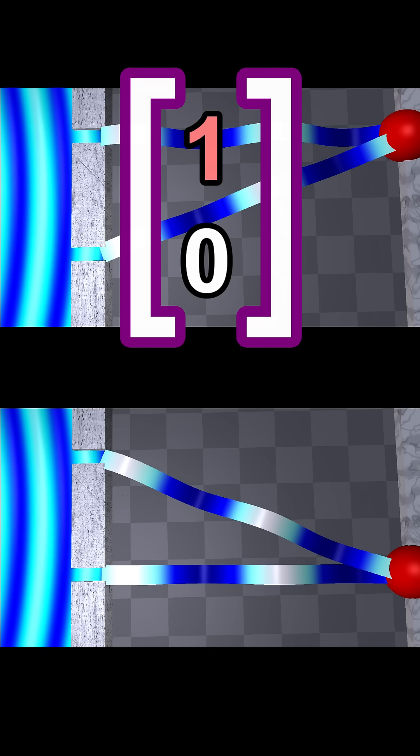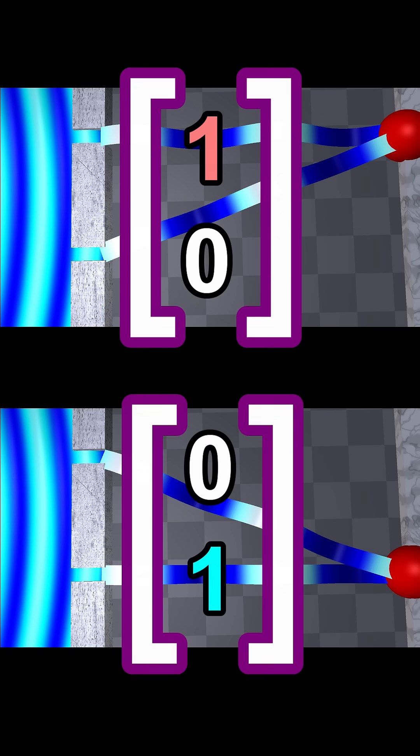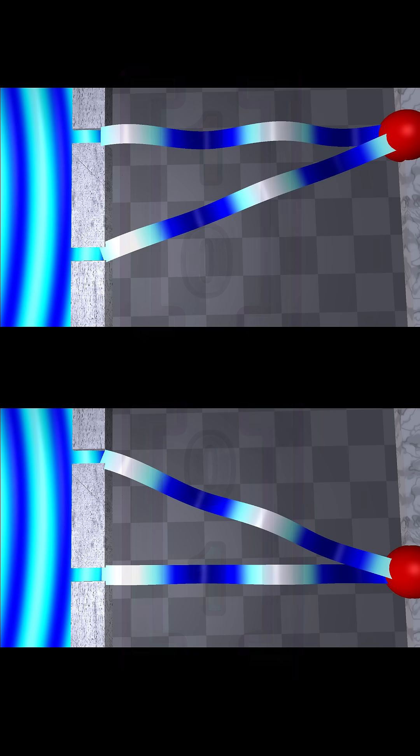We will signify observing the particle in the top location with a one followed by a zero, and we will signify observing the particle in the bottom location with a zero followed by a one. The C variables represent the values of each of these wave functions at the final location of the particle.